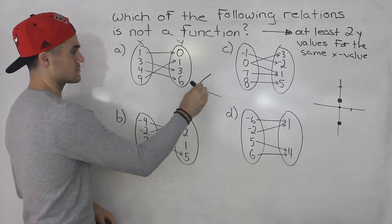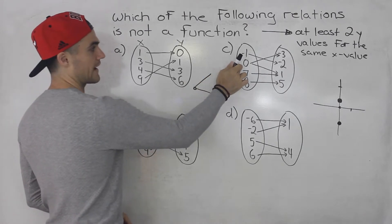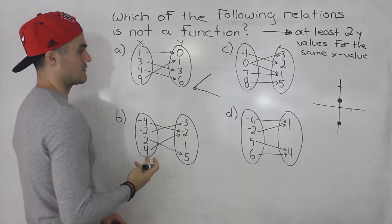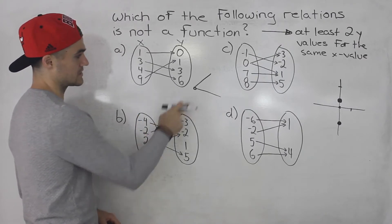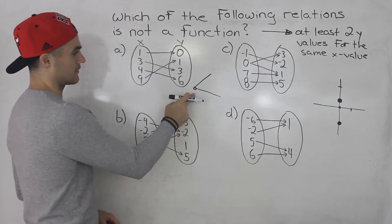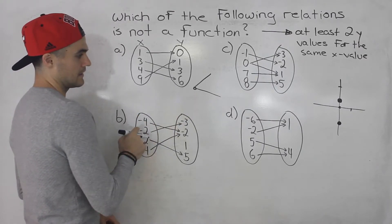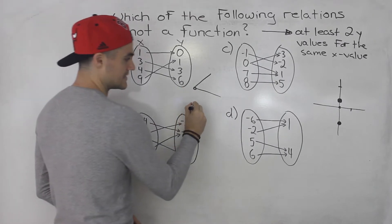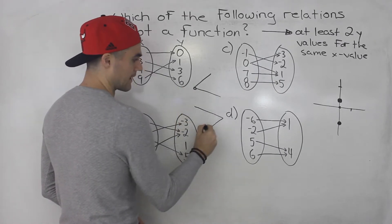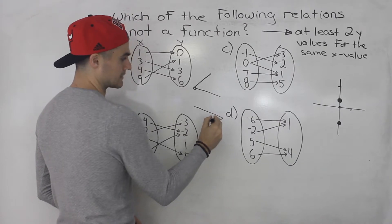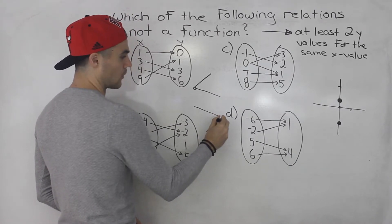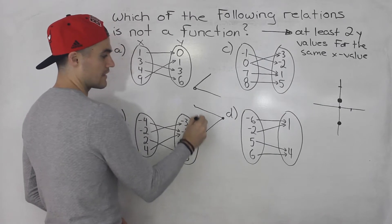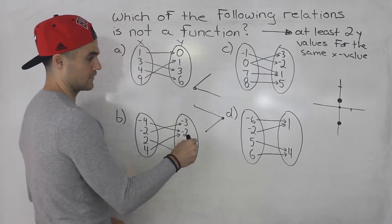So that's what you want to look for. If for a single x value there are multiple y values, it's not a function. Notice how in the other diagrams this pattern doesn't exist. One thing I want to mention is that this pattern is different from a different pattern — where there is a single y value for two different x values. That can happen in a function.